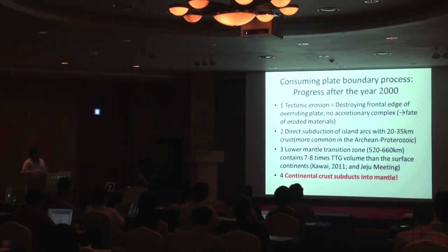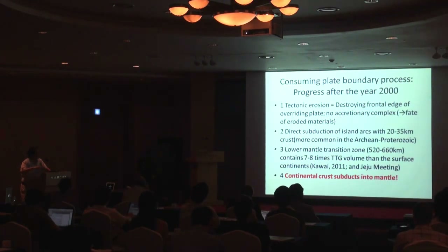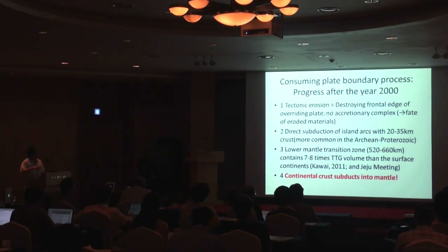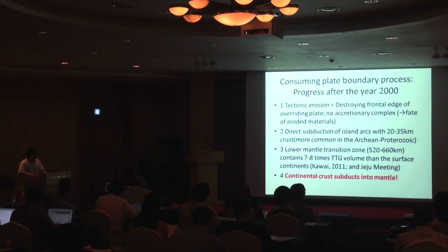Second, direct subduction of island arcs in the Western Pacific involves 20 to 35 kilometer thick crust. Direct subduction of island arcs means granite is now being subducted, which is more common in Archaean-Proterozoic crust. Third, the lower mantle or transition zones contain seven to eight times more granite plots than surface continents. Therefore, continental crust has been subducted into the mantle.